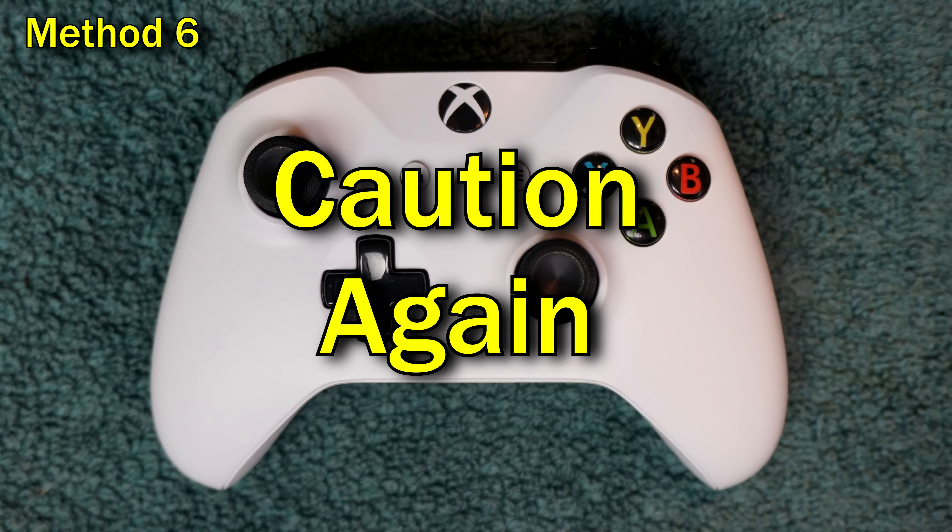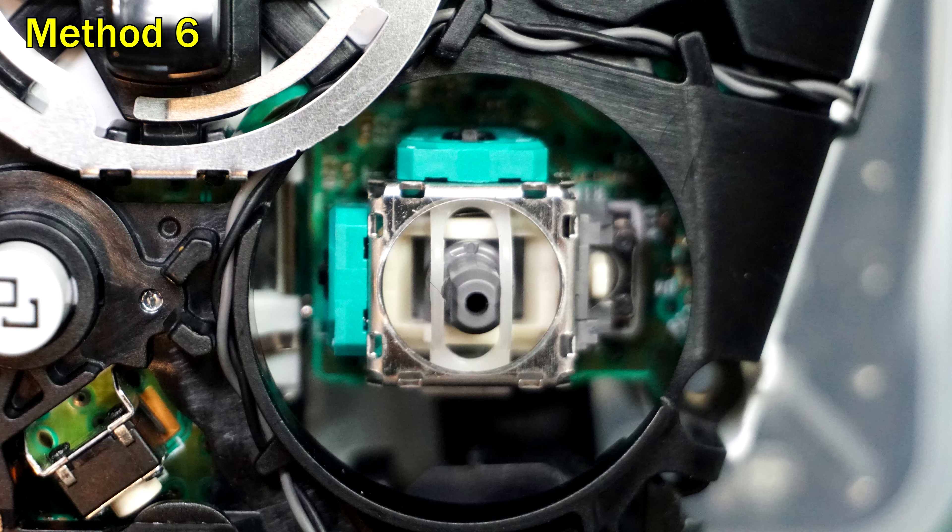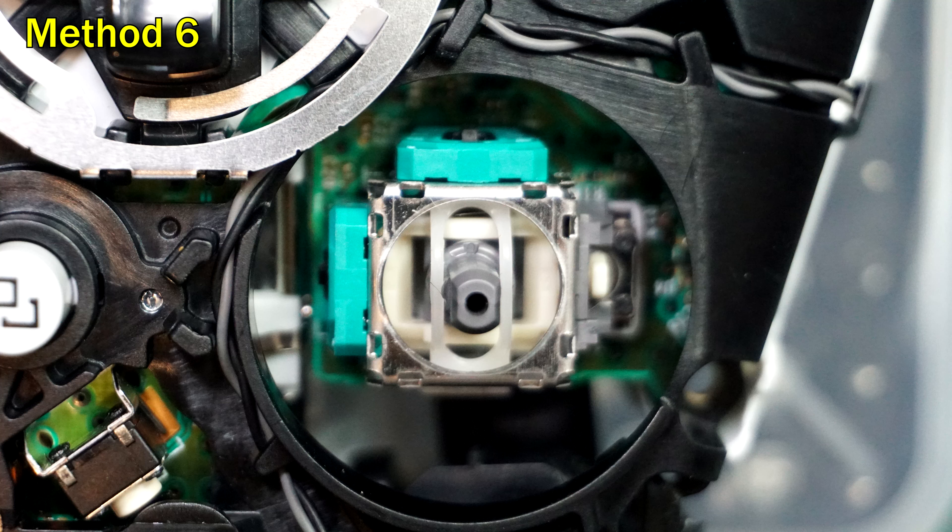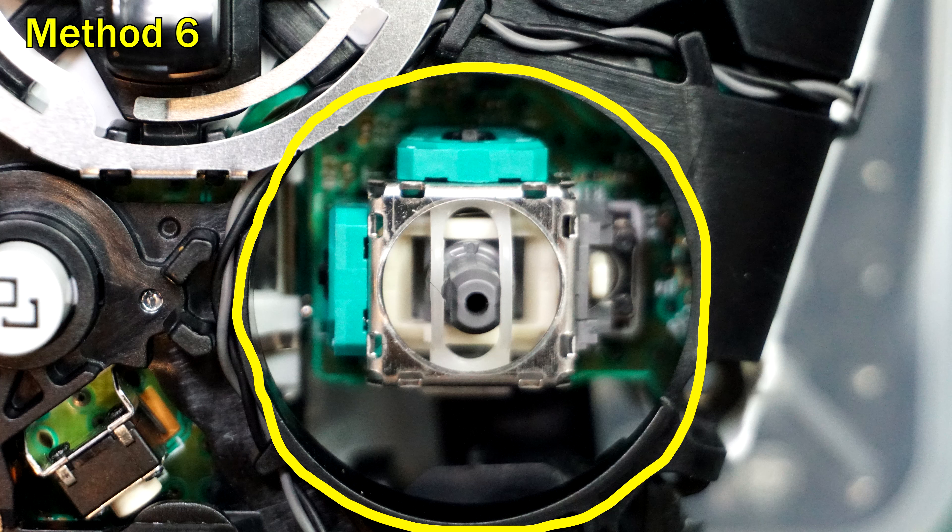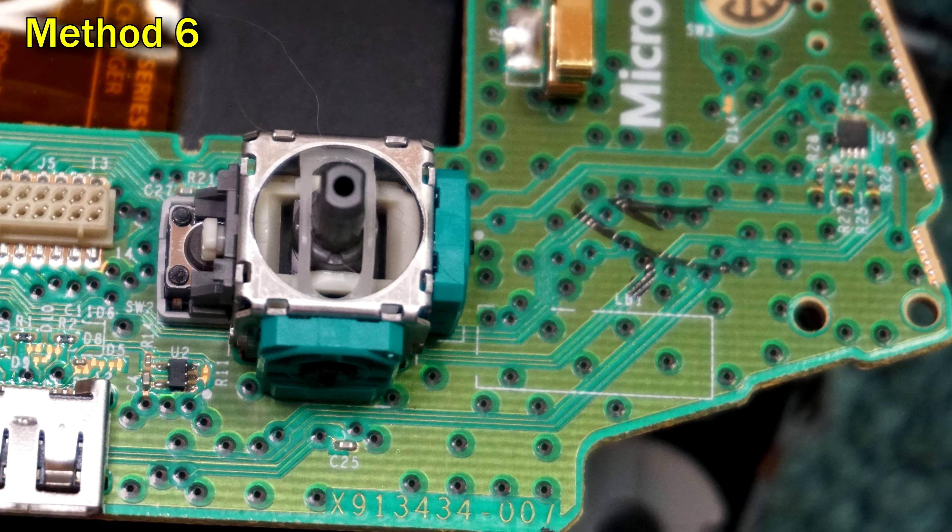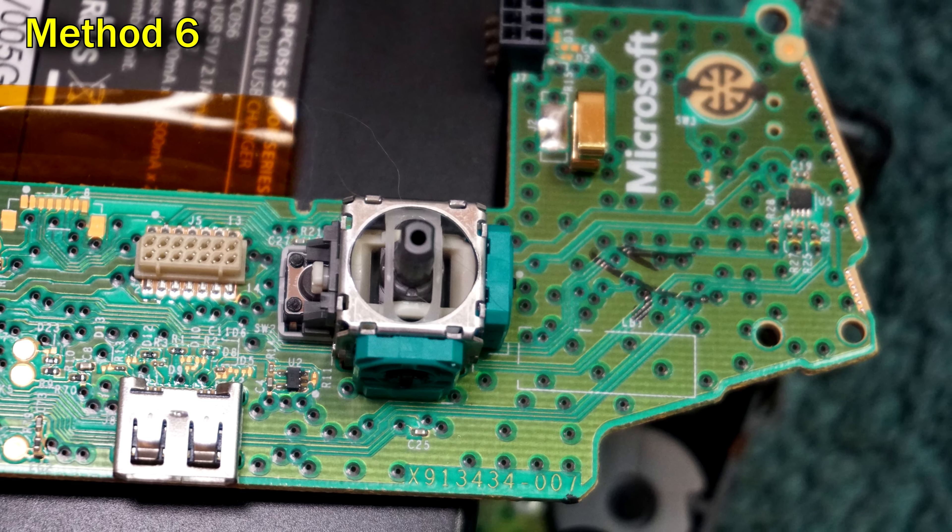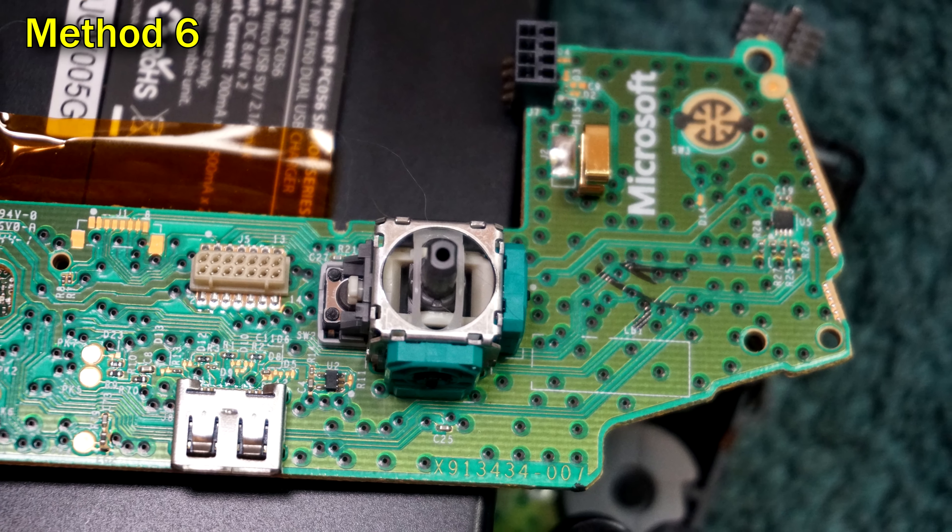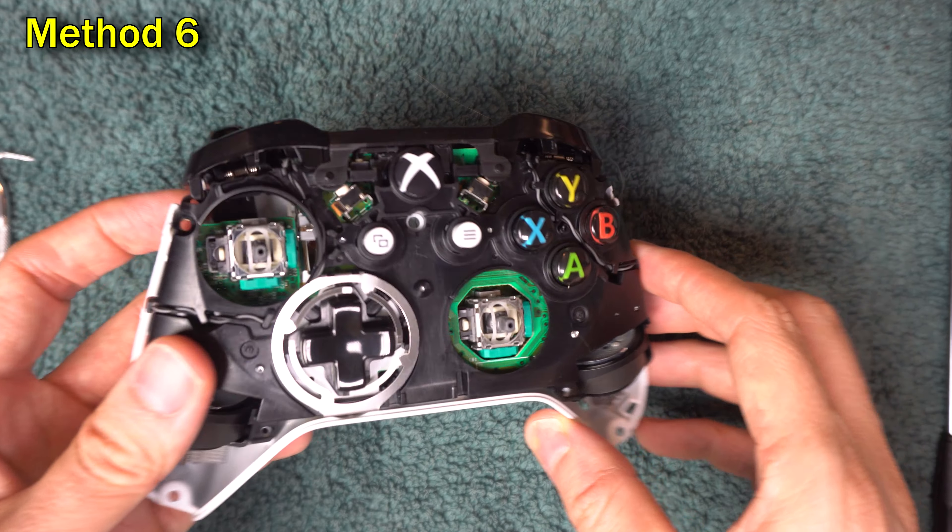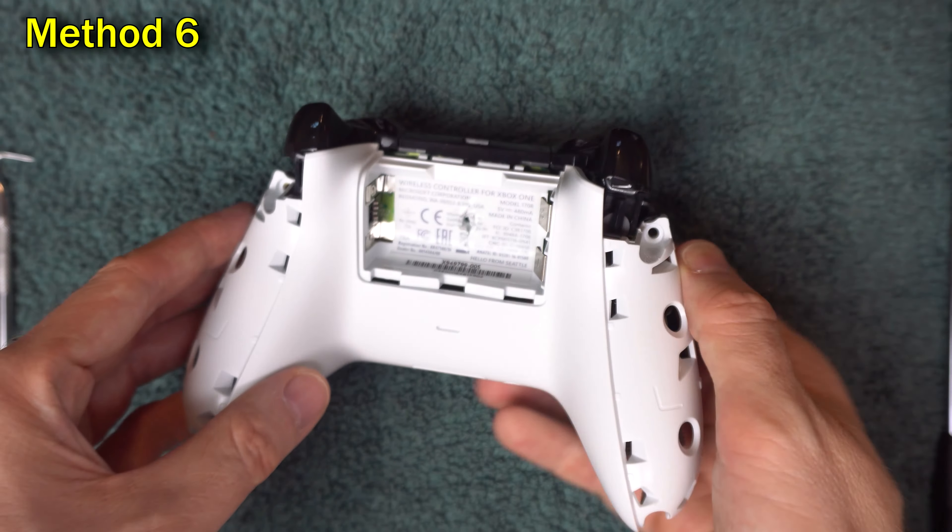Method 6 involves going even deeper than method 5. So there's obviously risk involved. You could damage your controller. We're going to open those doors and clean the insides. The plastic around the stick area is too close to open the doors wide enough. So we need to get it out of the way. From this point forward, your controller's insides may differ from what I'm showing here. Just remember, the idea is to get more access to the doors. So just find a way to disassemble enough of it to get to that point.